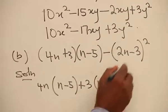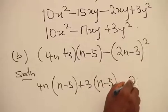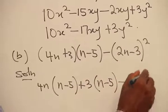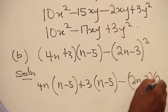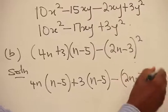Then we have here minus 2n minus 3, and because it is squared, another 2n minus 3.